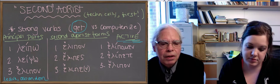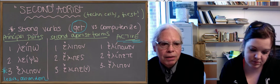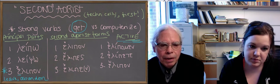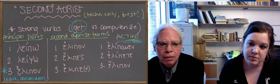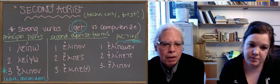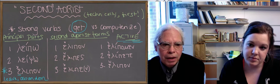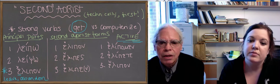But the aorist is different, it's e, you've got your augment, and then lip instead of leip. What's happened is the e has disappeared, and you just have lip, and then on, no S-A.